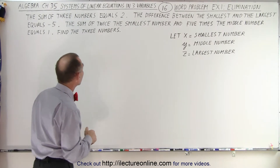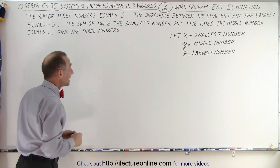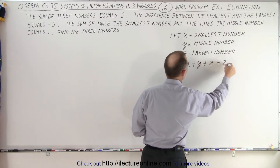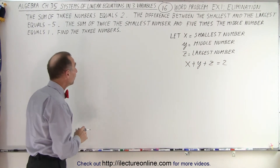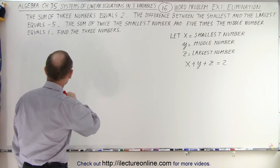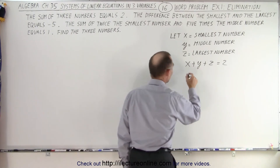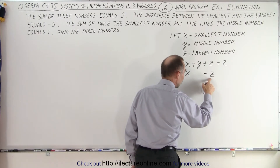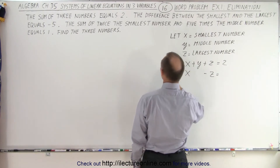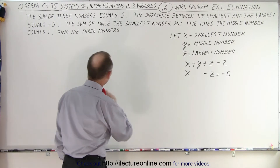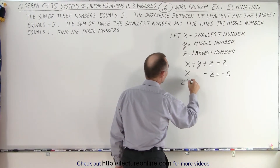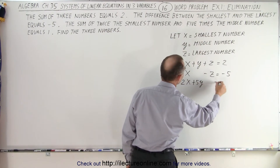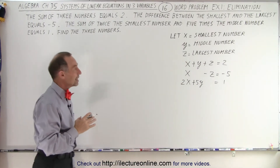The first condition says that the sum of the three numbers equals 2, so we can write x plus y plus z equals 2. That's our first equation. The difference between the smallest and the largest equals negative 5, so x minus z equals negative 5. Then twice the smallest, which is 2x, plus 5 times the middle number, plus 5y, equals 1. And there are the three equations.